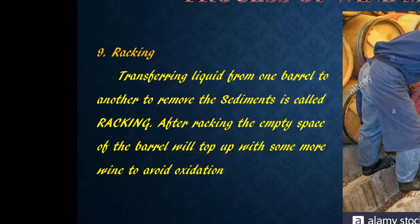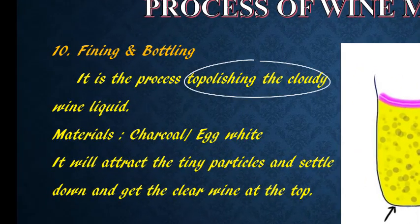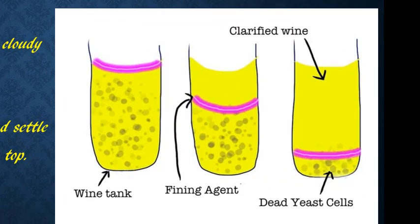The next step is fining. It is the process to polish the cloudy wine liquid. For fining, charcoal, egg white, and some other common materials are used to clarify the wine. The clarifying agent attracts tiny particles in the wine liquid, which then settle down, allowing clear liquid to be collected from the top of the barrel.